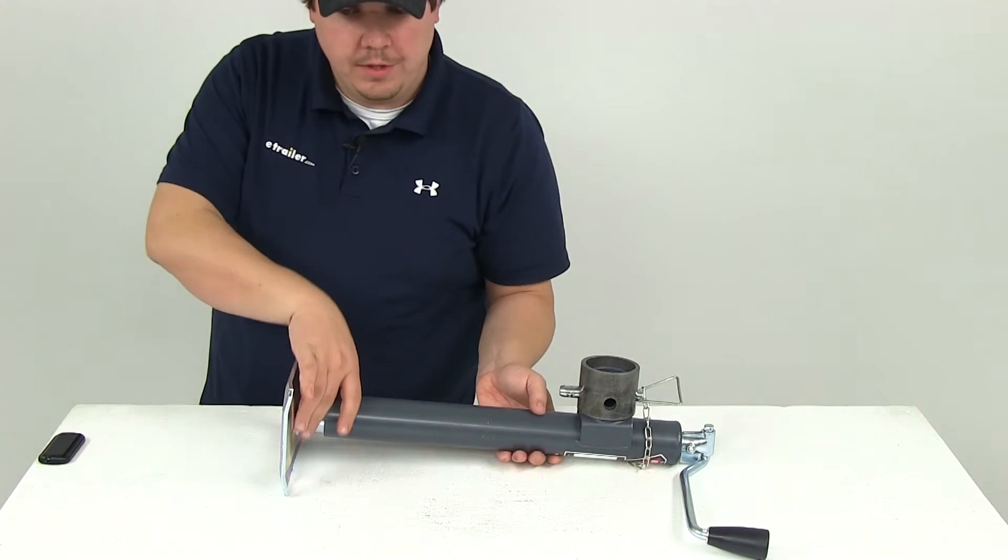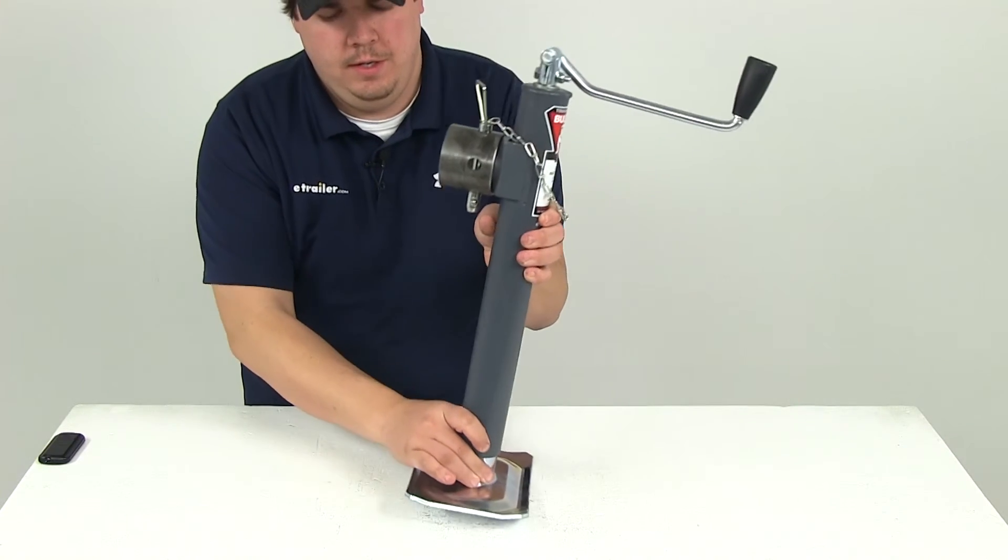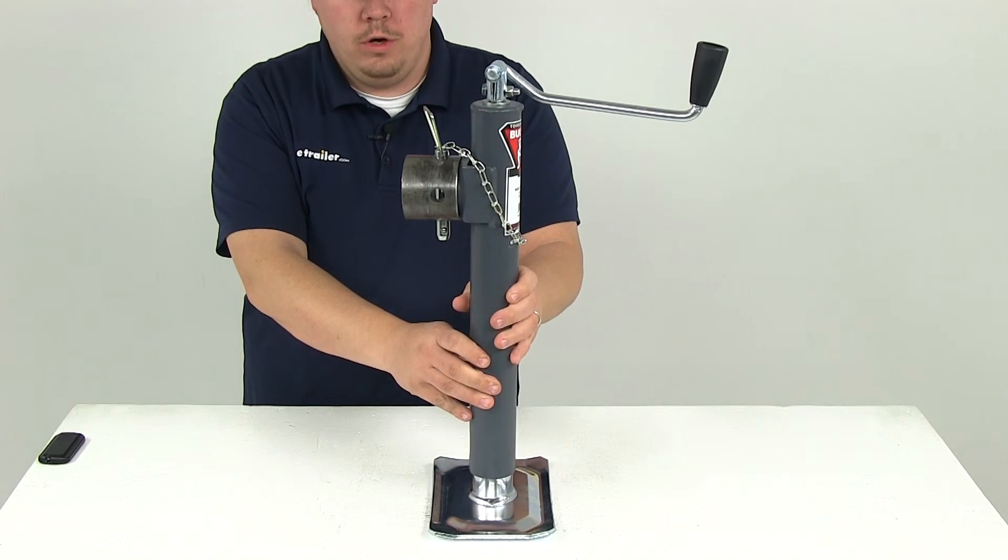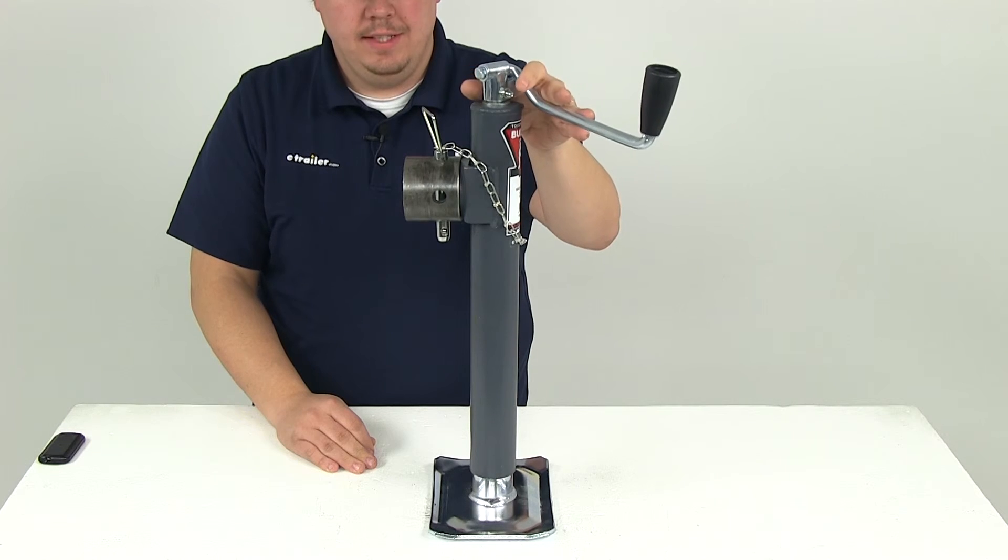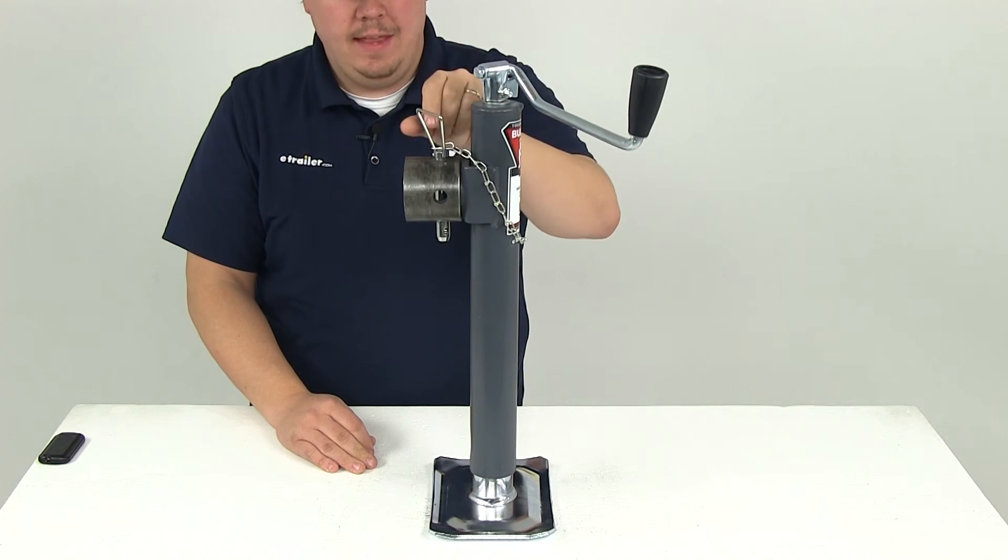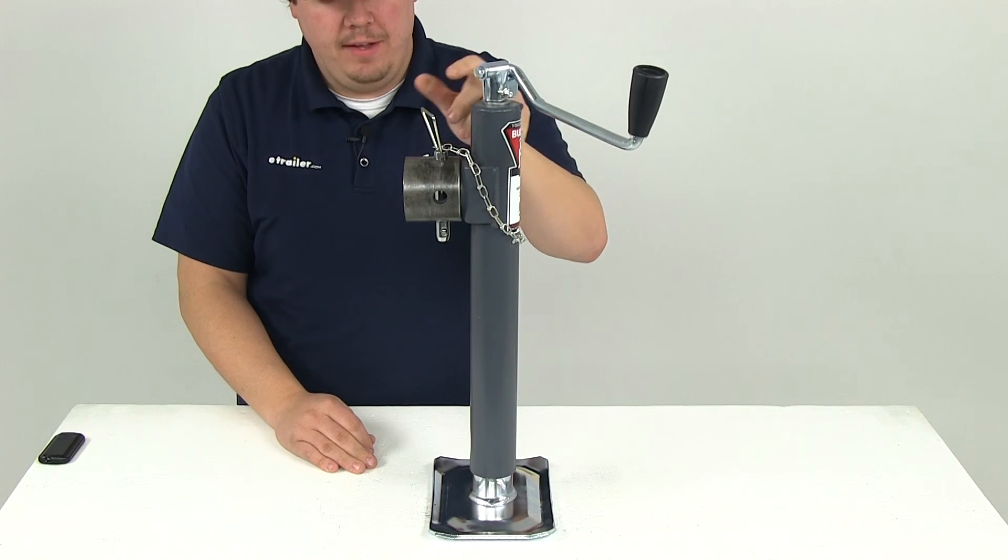The inner tube has a diameter of two inches. The outer tube has a diameter of 2 and 1/4 inches. The handle has a radius of 6 and 5/8 of an inch, and again the pool pin has a diameter of 5/8 of an inch.